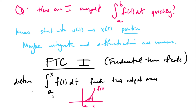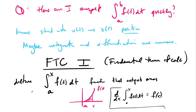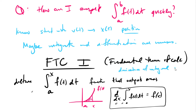Differentiation undoes the integration. It says d/dx of the integral from a to x of f of t dt is just f of x. If I produce a position curve by calculating areas and then take derivatives to get back to velocities, I get back the original velocity equation. So the Fundamental Theorem of Calculus Part 1 tells me that differentiation and integration are canceling operations — the derivative of an integral is the original function.